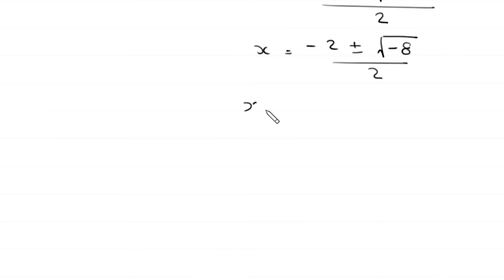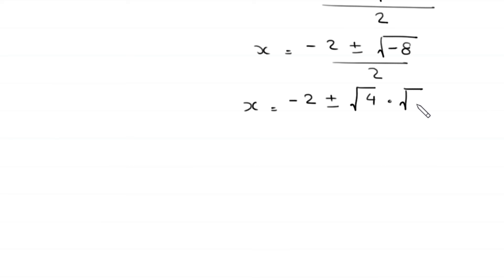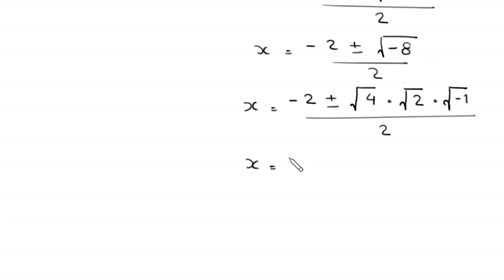We simplify √(-8) = √4 · √2 · √(-1) = 2√2 · i. So x = (-2 ± 2√2·i) / 2, giving x = -1 ± √2·i.